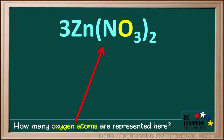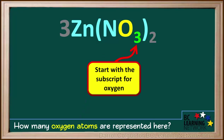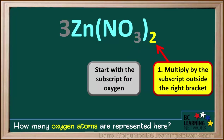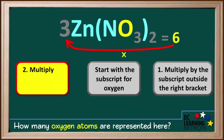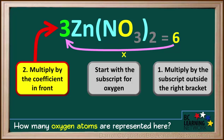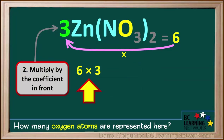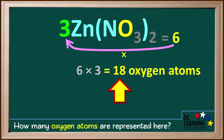Now we'll do an example with both brackets and a coefficient in front. We're asked how many oxygen atoms are represented here. In this type of problem, we always start with the subscript to the right of the oxygen atom. In this case it is a 3. The first thing we do is multiply this number by the subscript outside the right bracket, in this case a 2. So it's 3 times 2, which is equal to 6. This means there are 6 oxygen atoms in one molecule of Zn(NO3)2. The last step is to multiply this 6 by the coefficient in front of the formula, in this case a 3. So we go 6 times 3 equals 18. So there is a total of 18 oxygen atoms represented here.